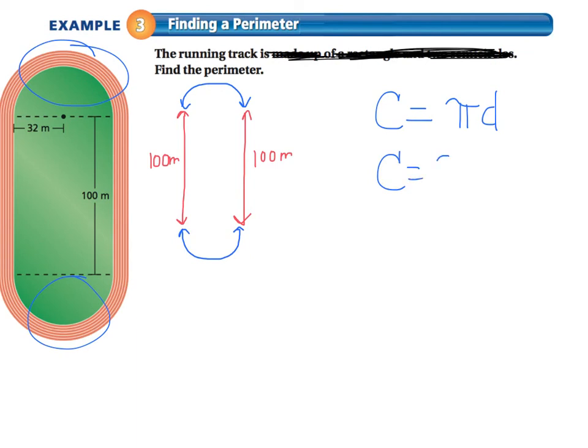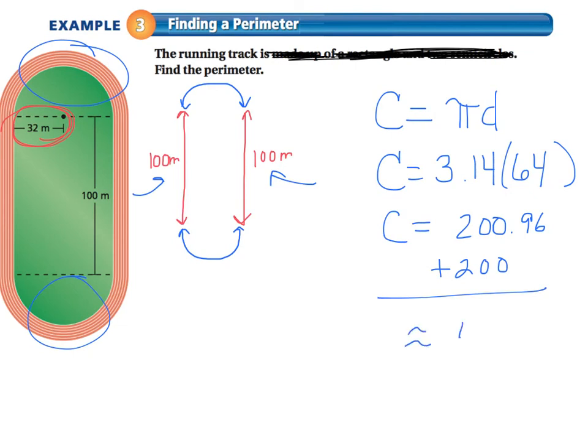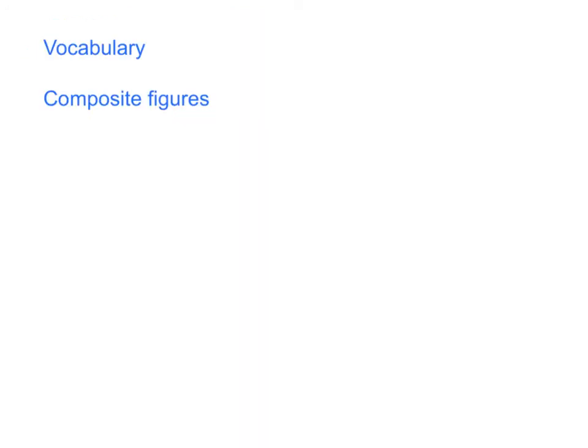pi multiplied by d. So circumference equals 3.14 multiplied by the diameter. But it looks like the radius is 32. So that means the diameter of them would be 64. And this would give me approximately, let's see, 3.14 times 64. That gives me approximately 201 or 200.96 if you actually wrote it to the nearest hundredth. But then I have to add the 200 onto that. The 100 here and the 100 here. And that would give me approximately 401 meters. So the track has a perimeter of about 401 meters. Your vocab for section 8.2 is composite figures.